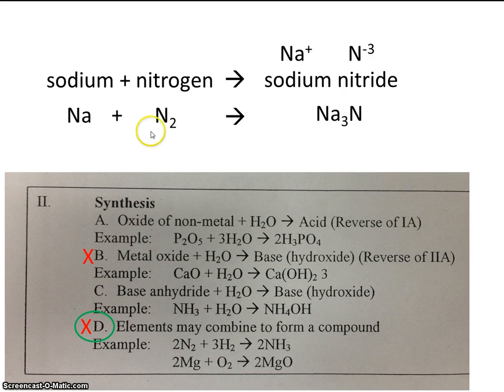Notice we have 2 nitrogens on the left. So, let's make 2 nitrogens on the right. This also made 6 sodiums on the right. So, we need, of course, 6 sodiums on the left. This problem is complete. But, recall the order in which we did it. The first thing we did is we predicted the products. The second thing was we wrote the formulas. And the third thing was we balanced the equation.